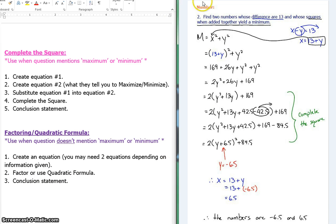The next type of question is a number type of question. Number two, find two numbers whose difference are 13 and whose squares, when added together, yield a minimum. There you go, they mentioned a minimum. So you know right away you're going to have to complete the square. Create equation number one. They mentioned a difference of 13. So the two numbers, x and y, differ by 13. And I'm just going to solve for one of the letters.